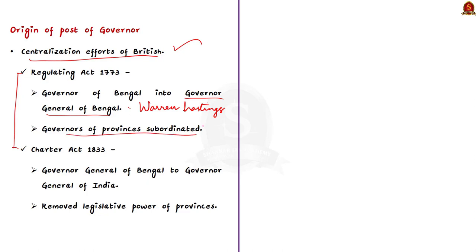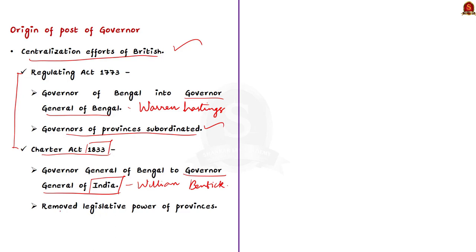The centralization process culminated in the Charter Act 1833, where the office of Governor General of Bengal was transformed into the office of Governor General of India. Lord William Bentinck was the first Governor General of India. The 1833 Charter Act even removed the legislative powers of the governors of the other two presidencies.